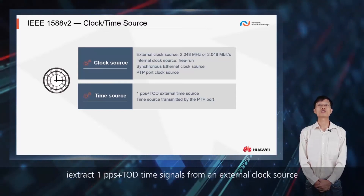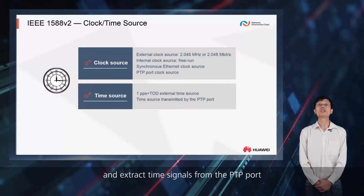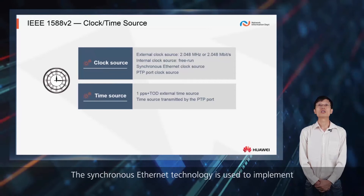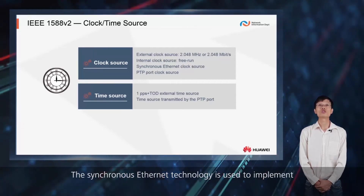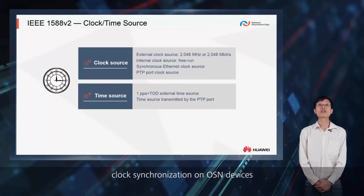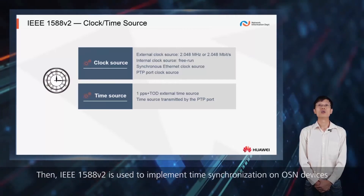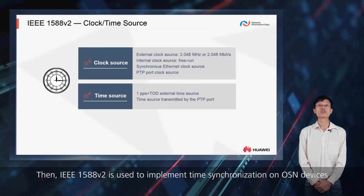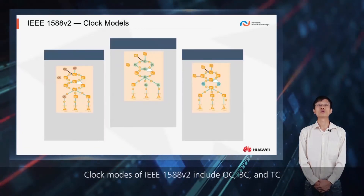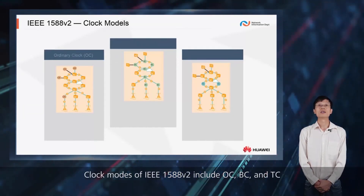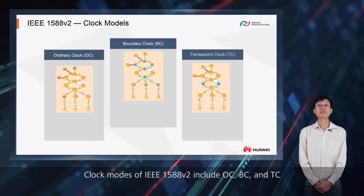Devices extract 1 PPS plus TOD time signals from an external clock source and extract time signals from the PTP port. The synchronous Ethernet technology is used to implement clock synchronization on OSN devices, and then IEEE 1588 version 2 is used to implement time synchronization on OSN devices. Clock modes of IEEE 1588 version 2 include OC, BC, and TC.